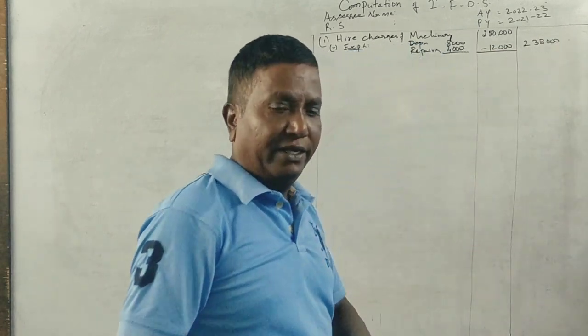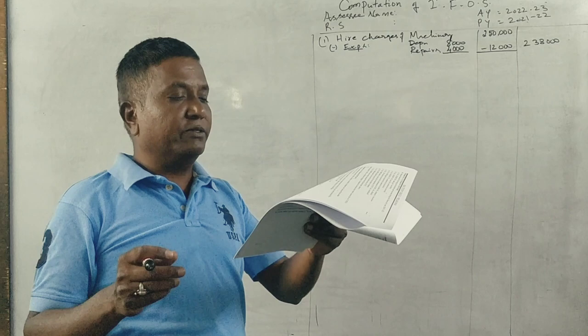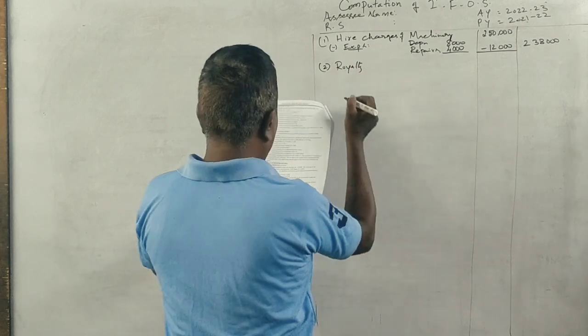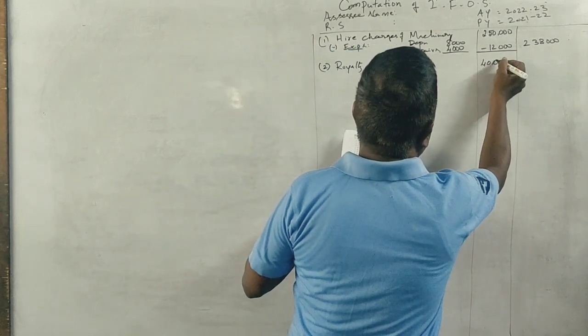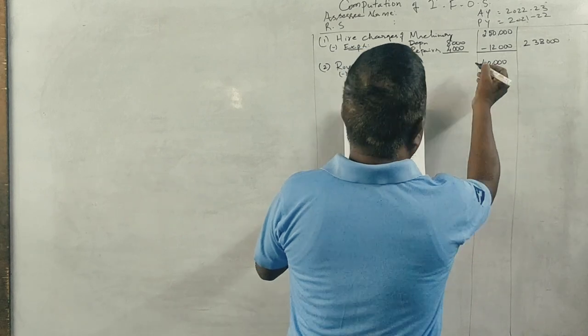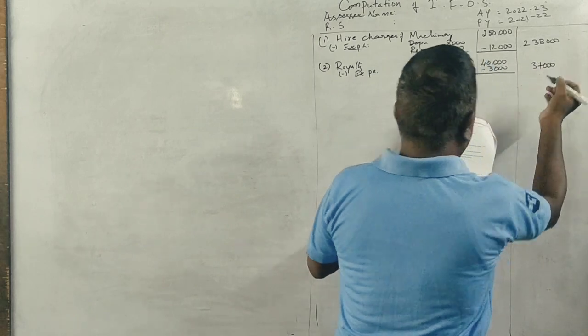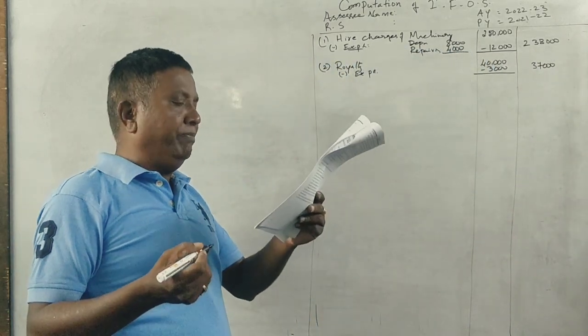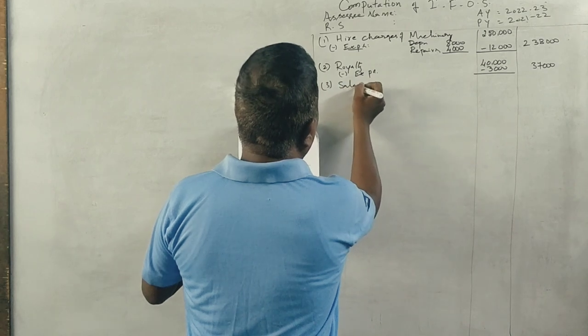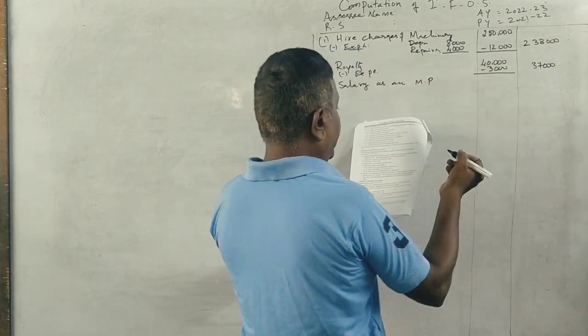Royalties: Rs. 40,000. Expenses related to this: Rs. 3,000. Total: Rs. 37,000. Next is salary of MP (Member of Parliament) - Rs. 35,000. Any salary of MP or MLA is fully taxable.